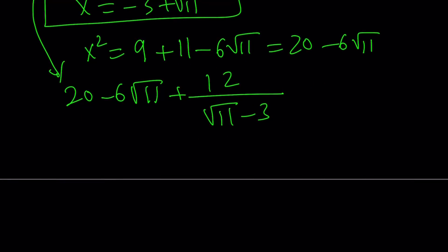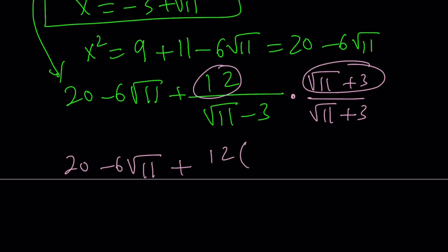Now let's multiply the top and the bottom by the conjugate of the denominator, which is root 11 plus 3. And see what happens from here. So 20 minus 6 root 11 is going to stay the same. I'm going to multiply this by that. That's going to become 12 times root 11 plus 3 divided by 11 minus 9, which is 2. I can cross cancel. That gives me a 6 here.